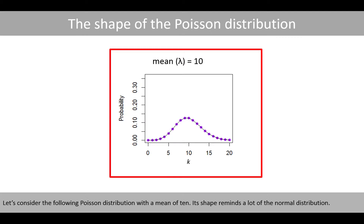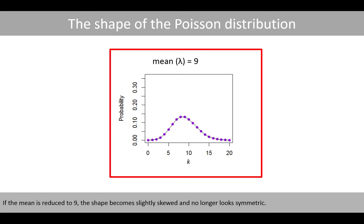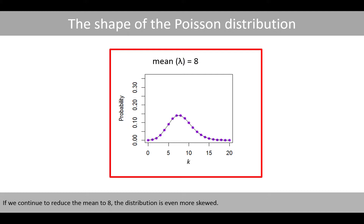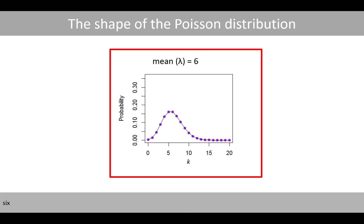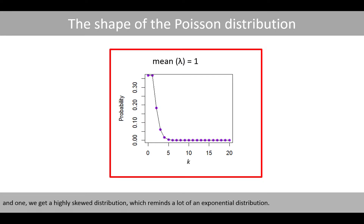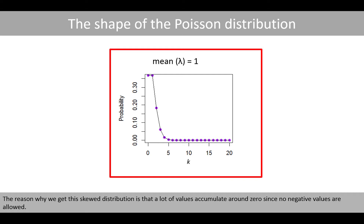Let's consider a Poisson distribution with a mean of 10. Its shape reminds a lot of the normal distribution. If the mean is reduced to 9, the shape becomes slightly skewed and no longer looks symmetric. If we continue to reduce the mean to 8, the distribution is even more skewed. Continuing to reduce to 7, 6, 5, 4, 3, 2, and 1, we get a highly skewed distribution, which reminds a lot of an exponential distribution. The reason for this skewed distribution is that a lot of values accumulate around zero since no negative values are allowed.